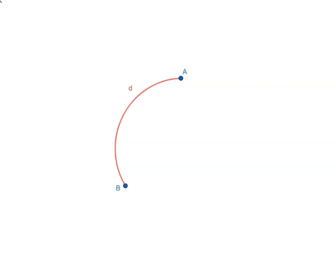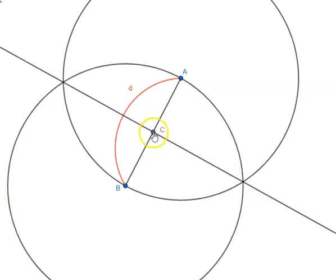So let us see how we can do that. Let us join AB and bisect this line segment AB. We know how to do that? Yes. So we have got the midpoint of AB line segment.